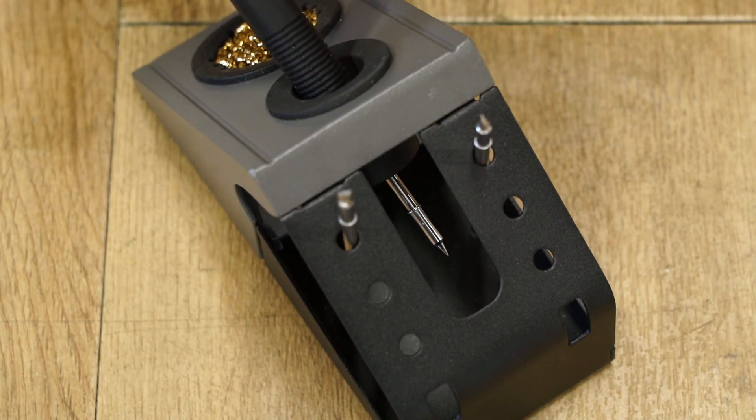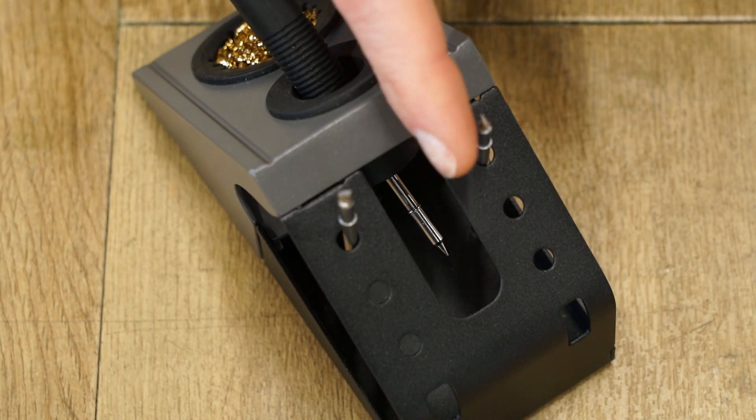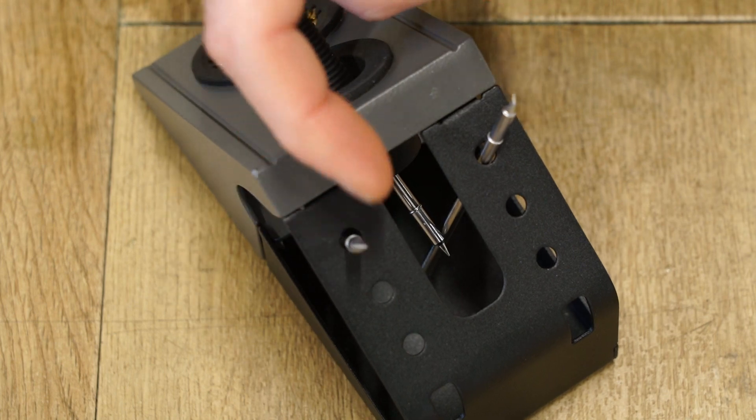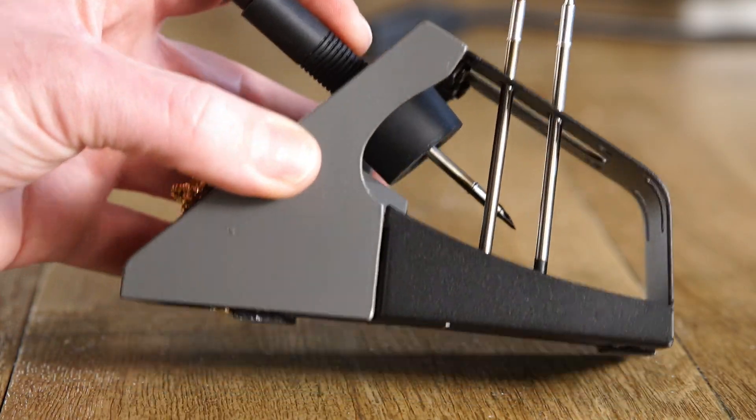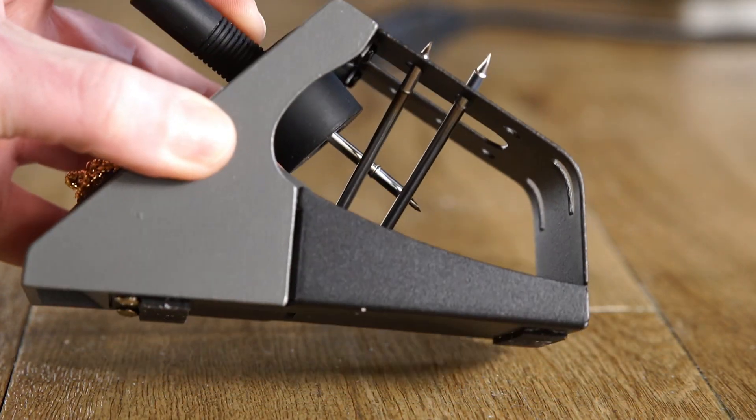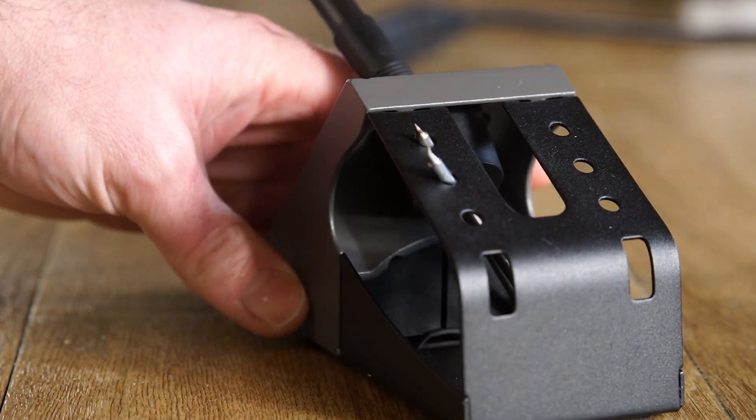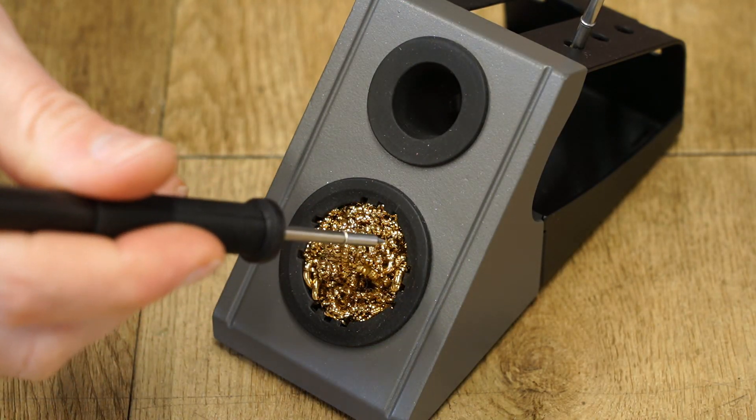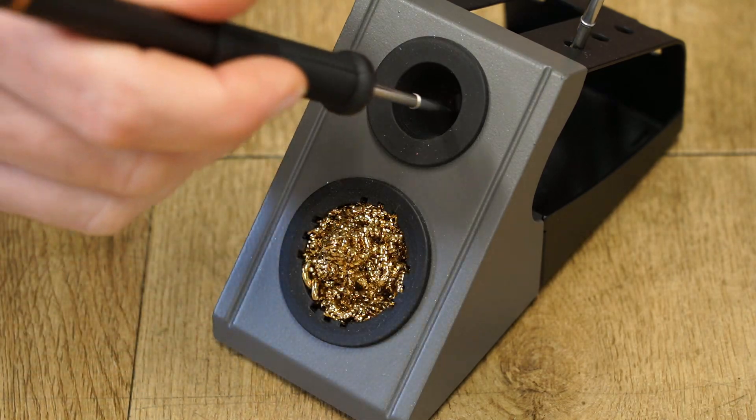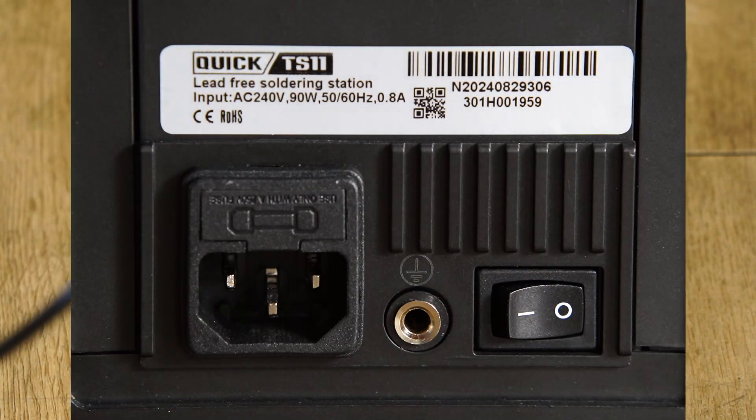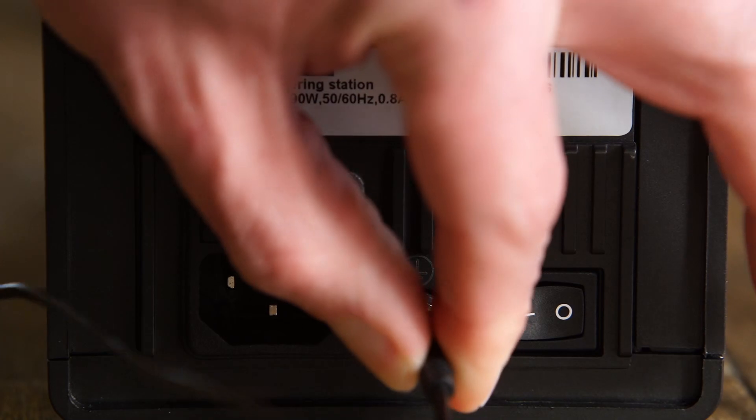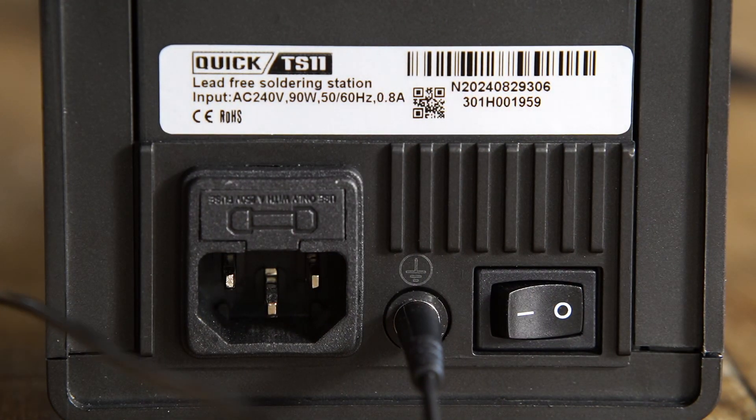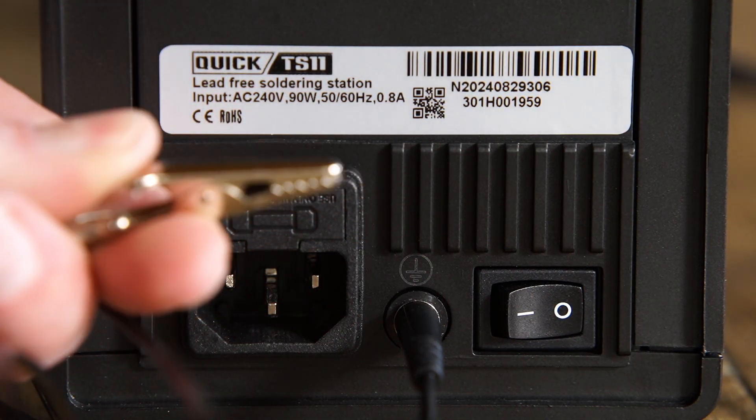The holder can store several tips, however I'm not a fan of the design which allows the tips to move around and cross over each other. At the front there is a brass wall holder for cleaning the iron tip. At the back of the station is your power input with a fuse, earth connection and power switch.